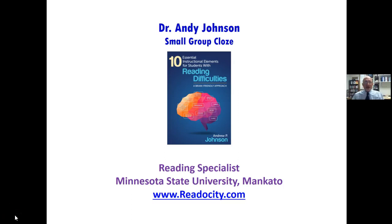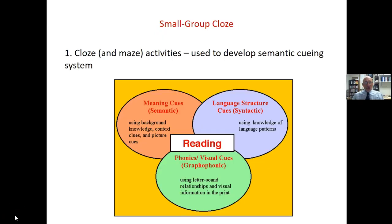Another neat strategy: the small group cloze. A cloze or a maze are activities used to develop the semantic cueing system. Remember, there are three systems the brain uses to create meaning with print: semantics — meaning and context clues; syntax — grammar or word order; and phonics.